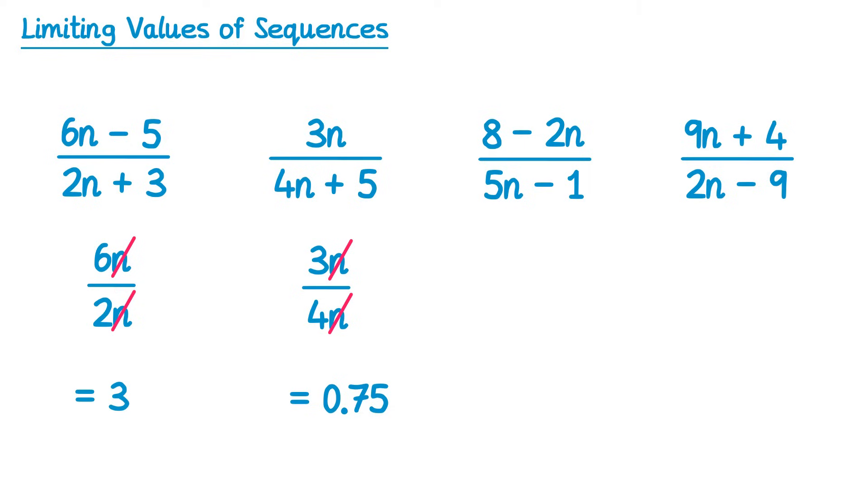For this next one, you have to be careful with the negatives. We would lose the 8 and the negative 1, leaving us with negative 2n over 5n. Cancel out the n's and you've got negative 2 over 5, which is negative 0.4. For this final one, it's the 4 and the negative 9, so we've got 9n over 2n. Cancel out the n's. 9 over 2 is 4.5.